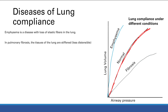In pulmonary fibrosis, the lung tissue is stiffened and less distensible, so lung compliance decreases — a lower slope on the pressure-volume curve. The lungs will have a greater tendency to collapse, while the chest wall tendency to expand remains the same. Therefore, functional residual capacity decreases because the greater tendency to collapse means the balance point is reached at lower volumes.